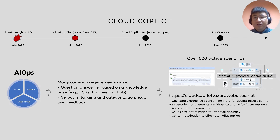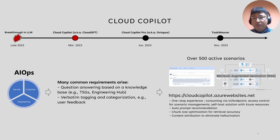In the early days, we also called it CloudGPT, so some of you may have heard of this name. CloudCopilot is a retrieval augmented generation system, or RAG system, that can answer questions based on user-provided documents. We support a one-stop experience where the user can upload their docs at our website. In the background, we do chunking and indexing. The user can then ask questions from the UX or call the API from their programs. We also support access control for scenario management. To support higher security requirements, we provide a self-host solution so the user can deploy their own service instance with Azure resources.